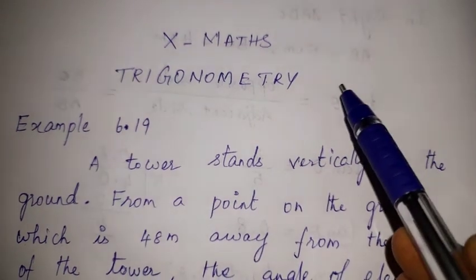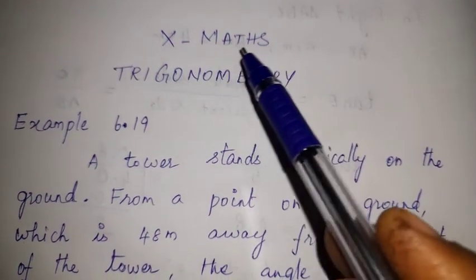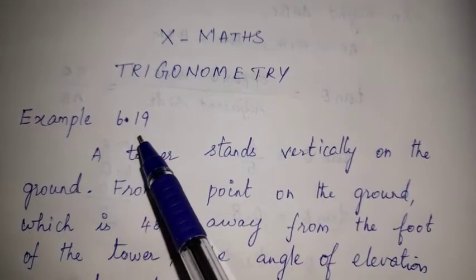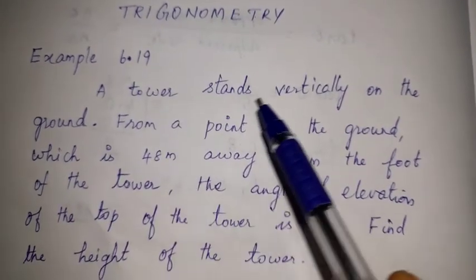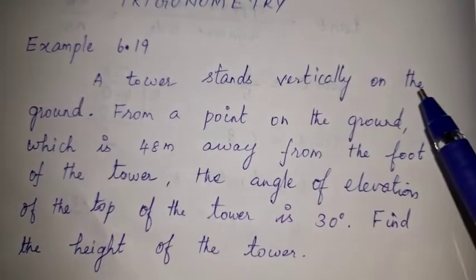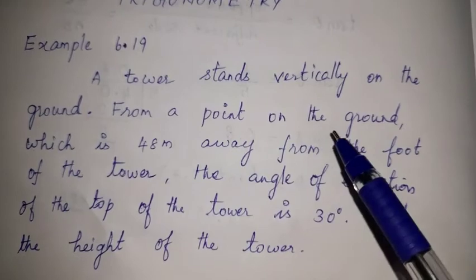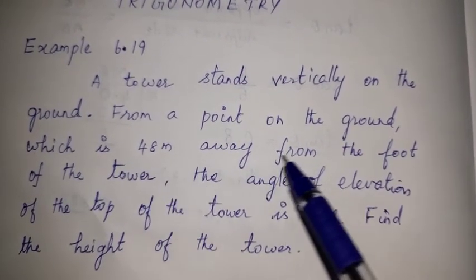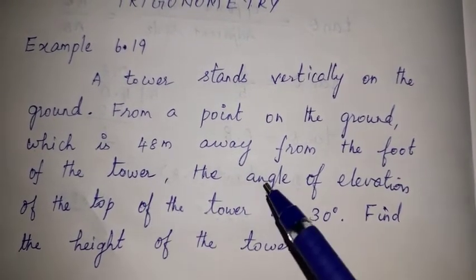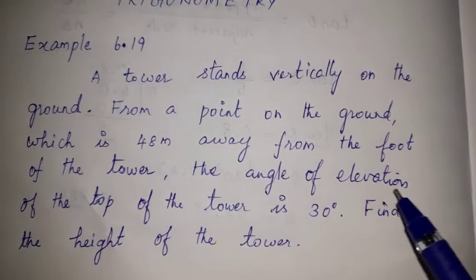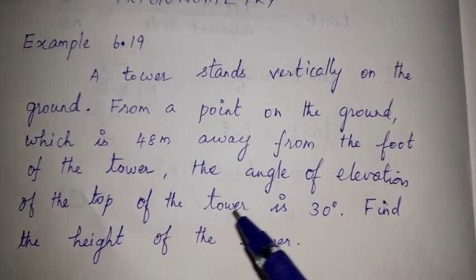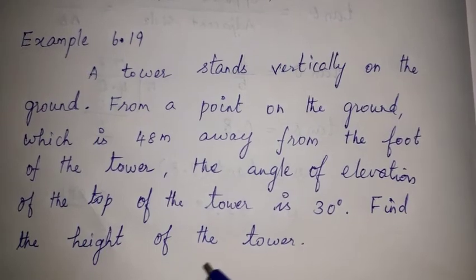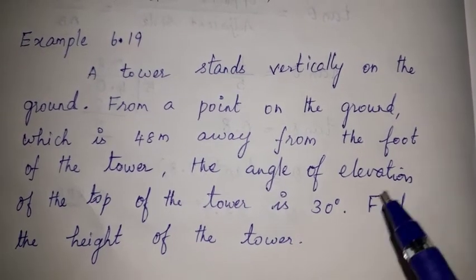Hi viewers, welcome to Tom Math 10 Standard Maths lesson — Trigonometry, Example 6.19. A tower stands vertically on the ground. From a point on the ground which is 48 meters away from the foot of the tower, the angle of elevation of the top of the tower is 30 degrees. Find the height of the tower.